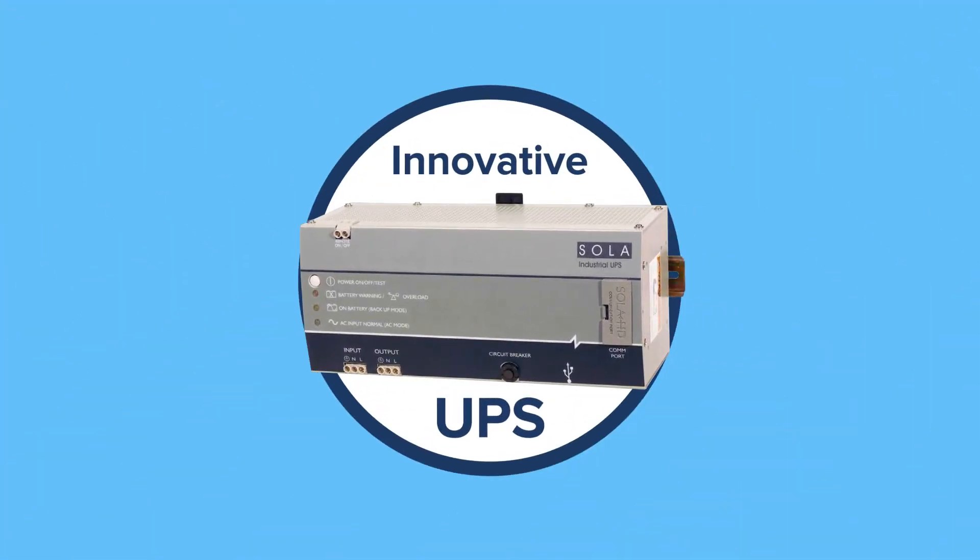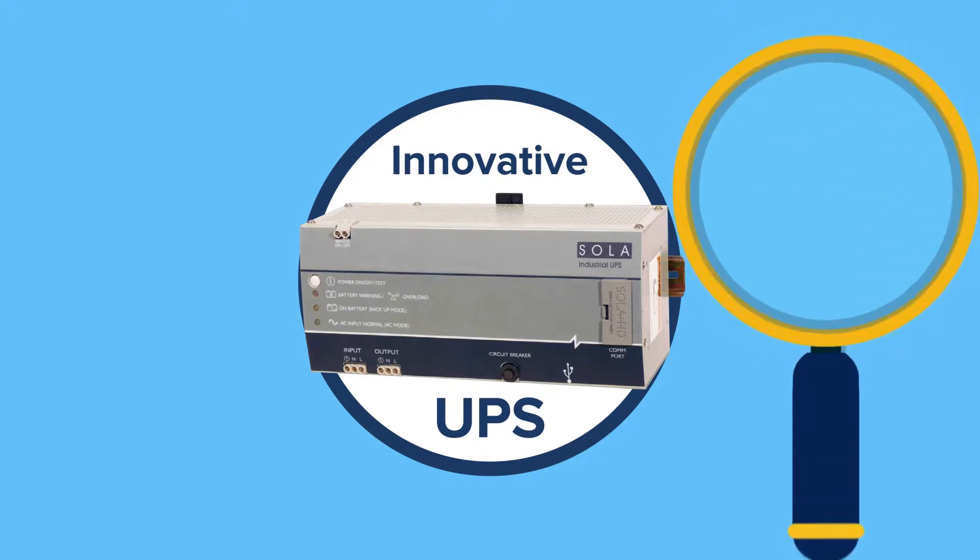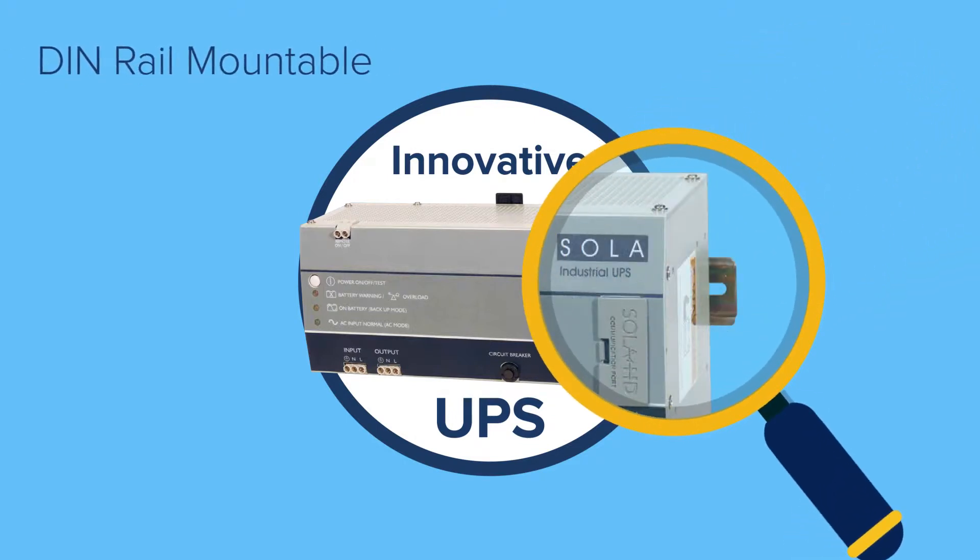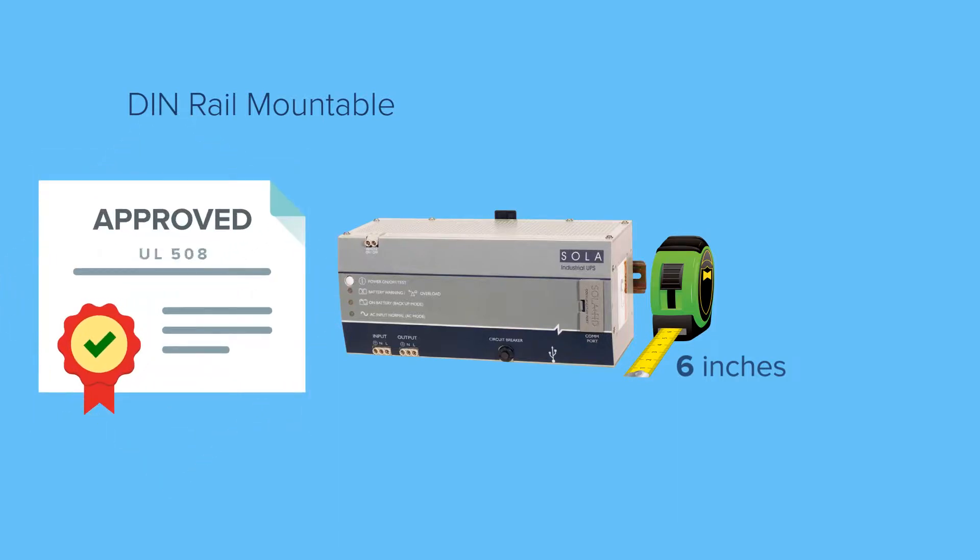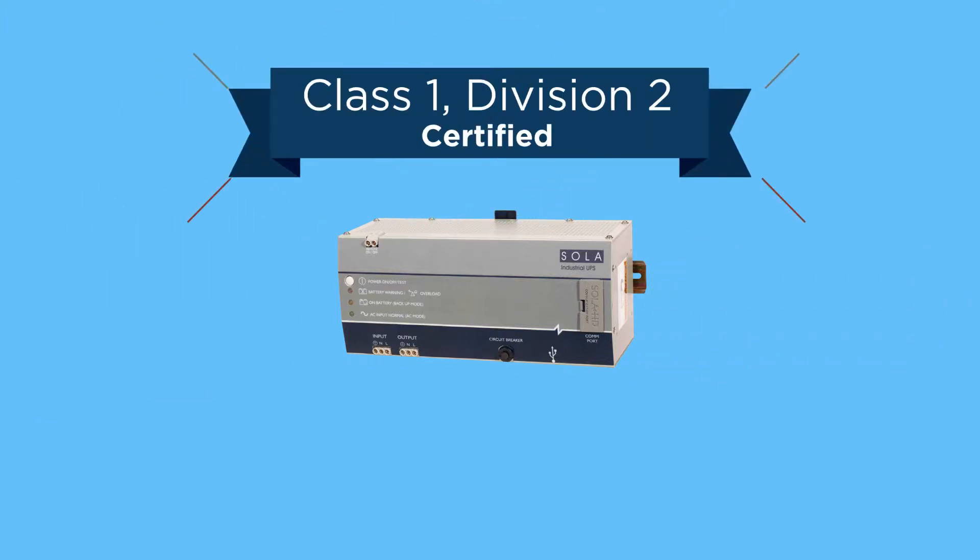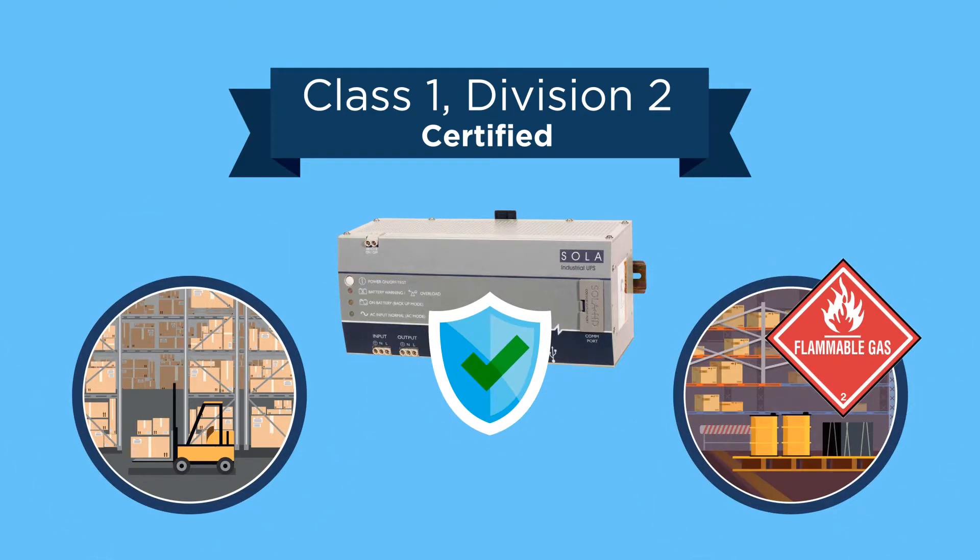This innovative UPS offers a variety of communication and network protocol options. Compact in size and DIN rail mountable, it can fit inside a six inch enclosure and is approved for use in UL508 applications at full power. Because it is Class 1, Division 2 certified, the SDUAC-A is safe for ordinary or hazardous environments.